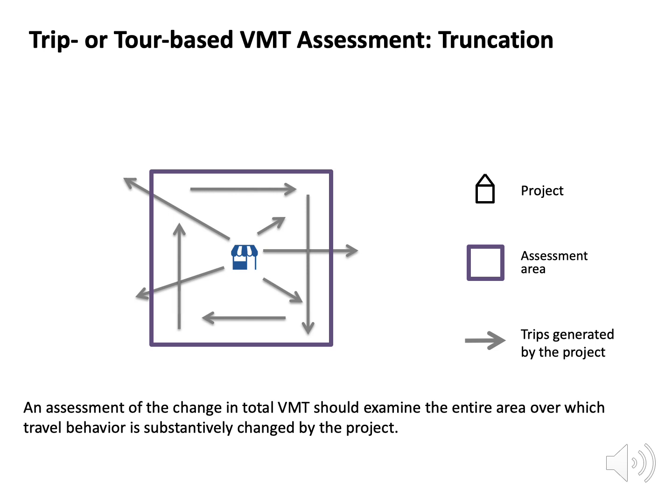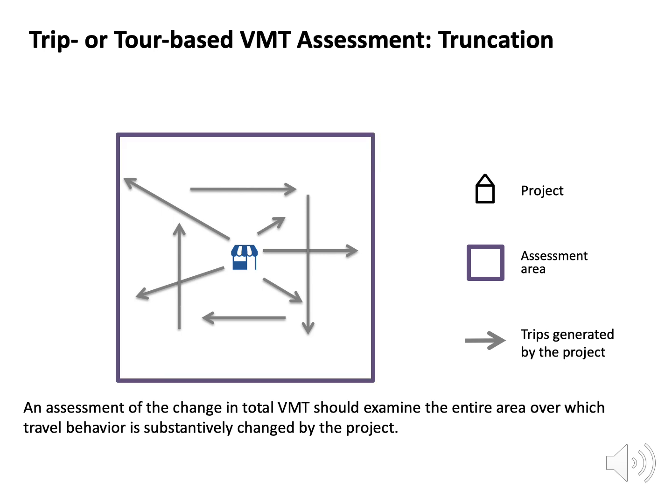For retail and transportation projects, OPR recommends studying the change in overall VMT resulting from the project. Assessments for such projects should assess the change in VMT across the full area over which the project affects vehicle travel patterns. If travel patterns are substantially affected outside of the area of analysis, the area of analysis should be expanded to include the full affected area. OPR has additional information, including detailed guidance, reports, and research pertinent to VMT assessment on its website.